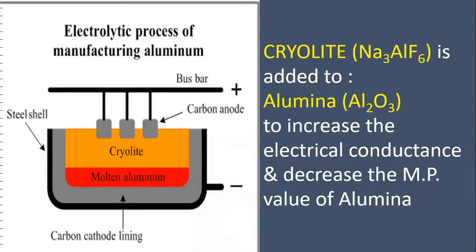Cryolite. What is the formula of cryolite? Na3AlF6. This is added to alumina. What is the purpose? It is to increase the electrical conductance and decrease the melting point of alumina, so that there is no waste of electricity.